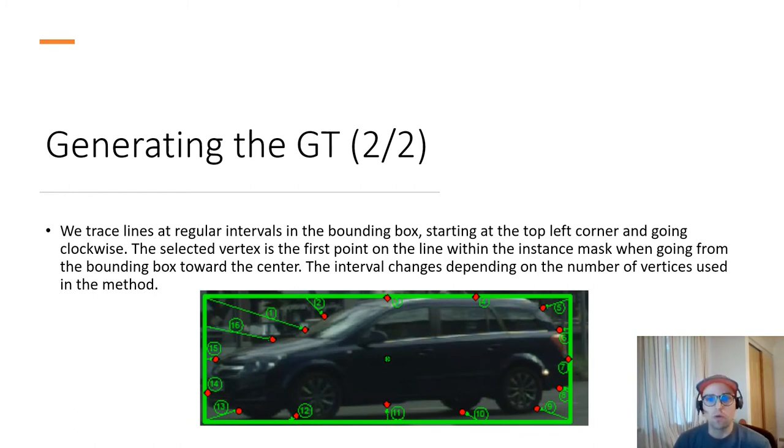To train the polygons, we needed a way to go from mask annotation to polygon annotation. The method we found is that starting from a mask, we trace a bounding box around that mask. And then we trace lines at regular intervals in the bounding box, starting from the top left corner and going clockwise. We select the vertex, which is the first point on the line that is within the instance mask, then going from the bounding box towards the center. The interval around the bounding box changes depending on the number of vertices we use in the method.